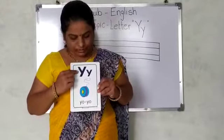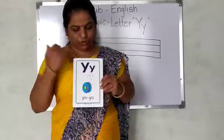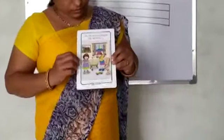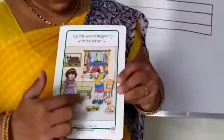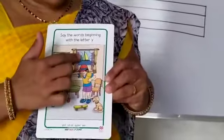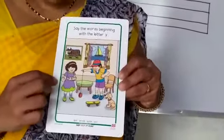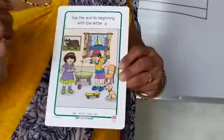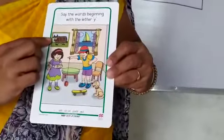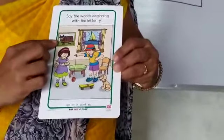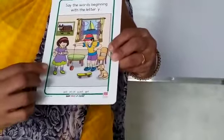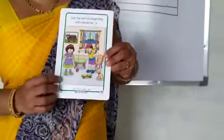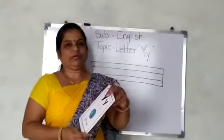Capital Y and small y. Now see it back. There are so many places yellow color is there. Okay, then Y — Yak. And Y — Yoyo. These are the pictures which begin from letter Y.